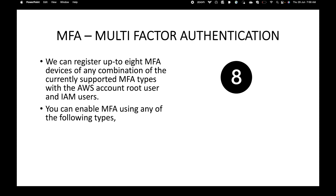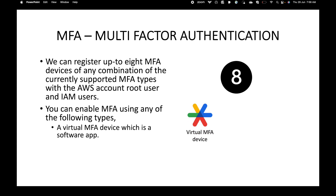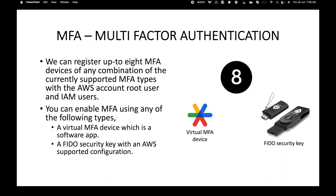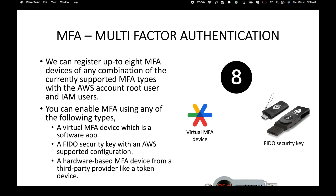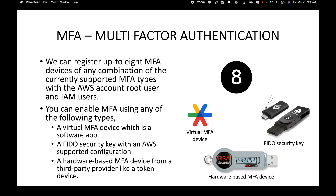You can enable MFA using any of the following types: a virtual MFA device, which is a software app; a FIDO security key with an AWS-supported configuration; or a hardware-based MFA device from a third-party provider, like a token device. You can use any of these options to set up your MFA.